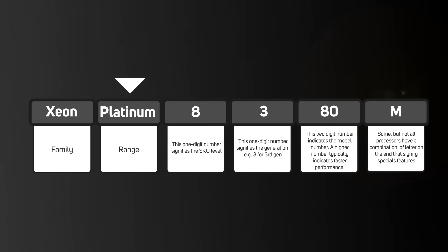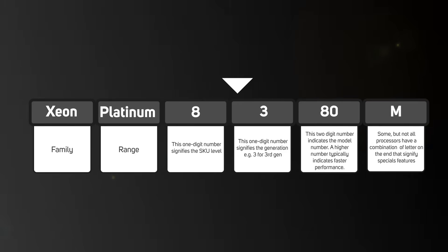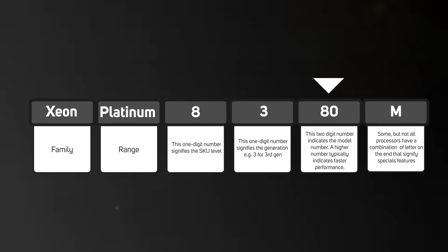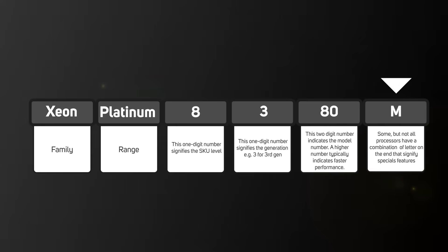The 8 from the 8380 is the SKU level — broadly speaking the higher the number the higher the spec. The 3 is the generation, in this case third gen Xeon Scalable. And the 80 refers to the processor model number, again the higher the number the more powerful the CPU. And if there were a letter at the end, this would tell us that it has a special feature, much like the K did in the earlier example.